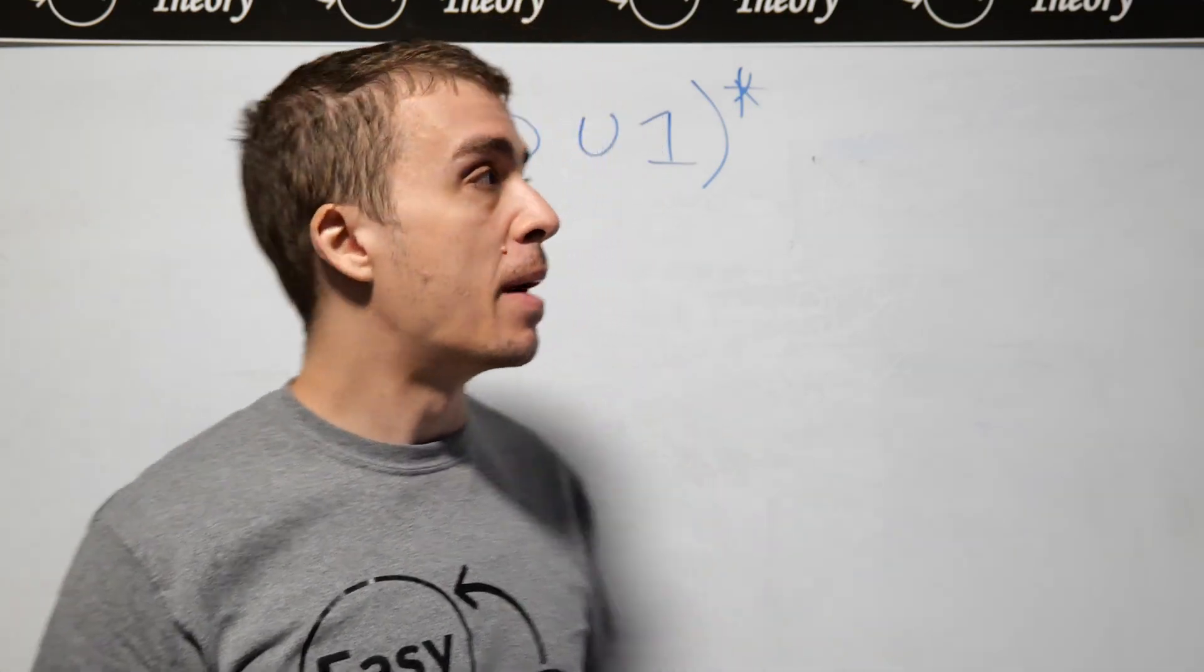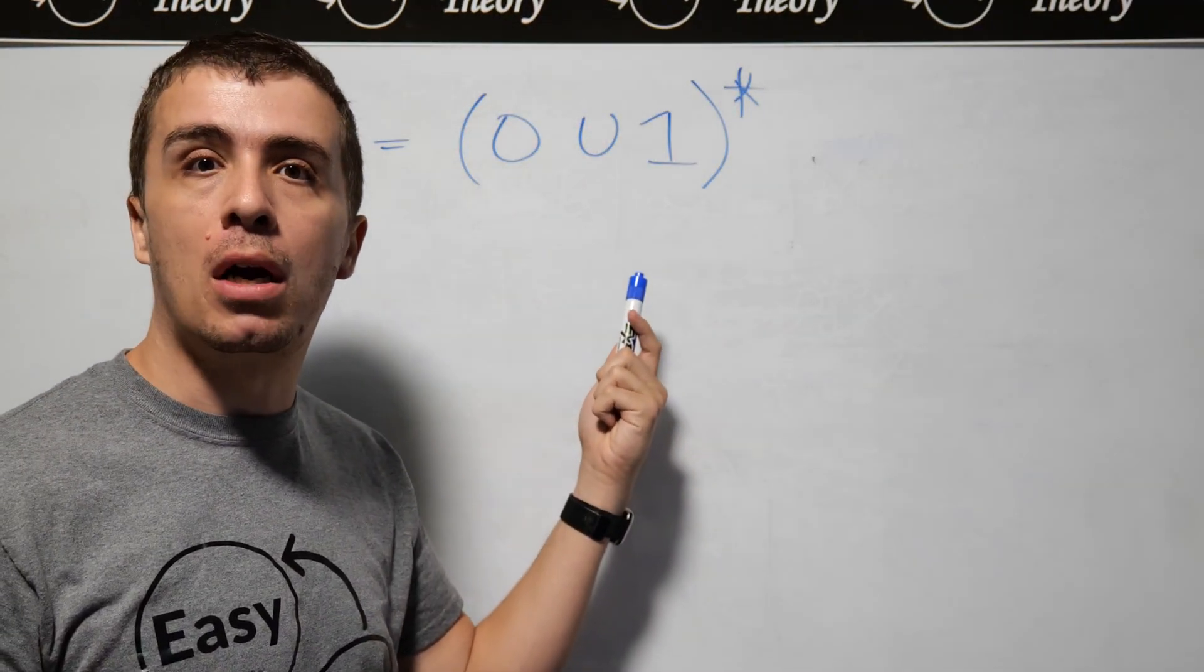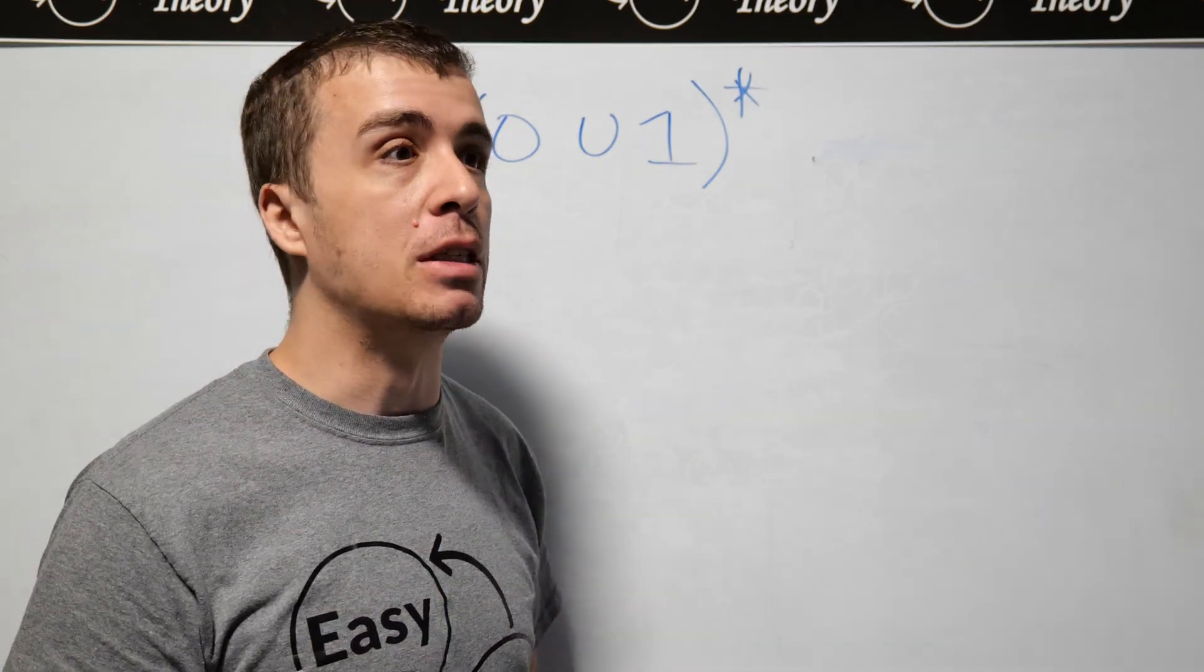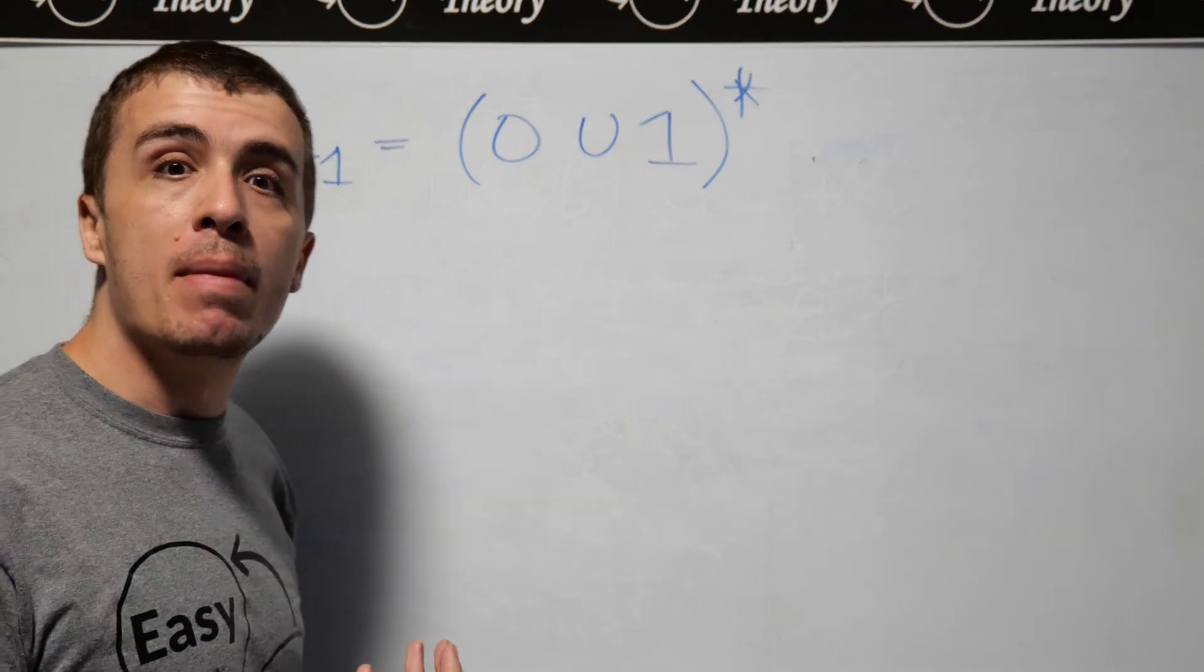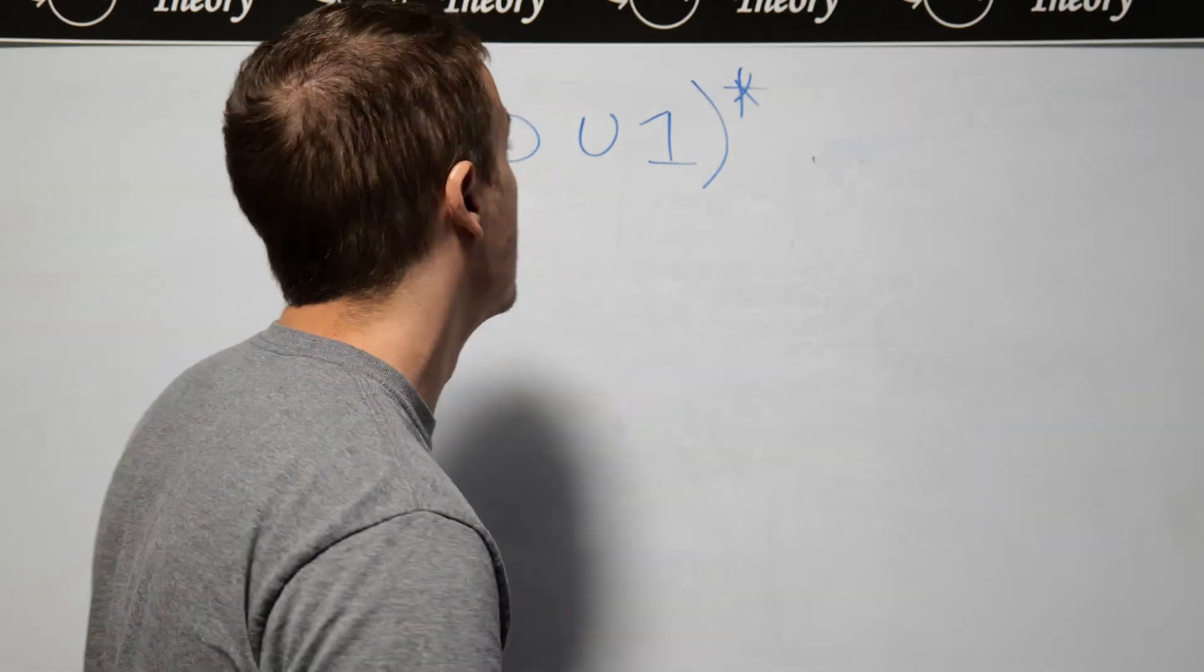So the first language we're going to be talking about is zero union one star, which is effectively all binary strings. We have this language called L1, and what we want to make is a context-free grammar for this language.